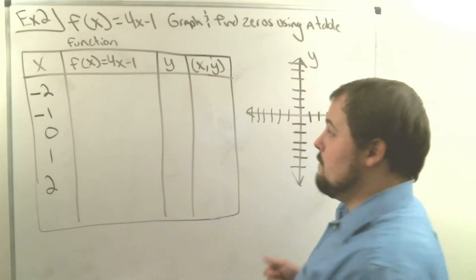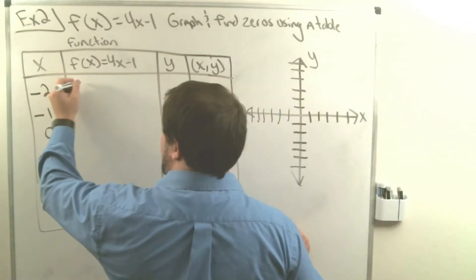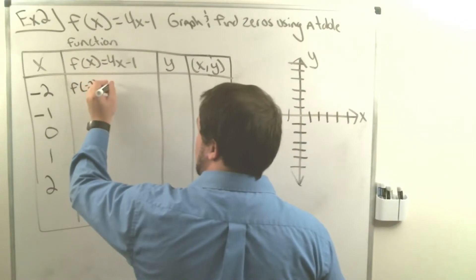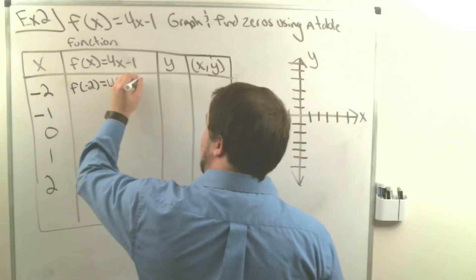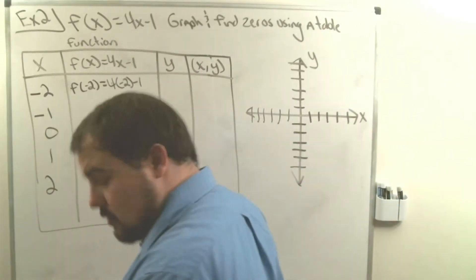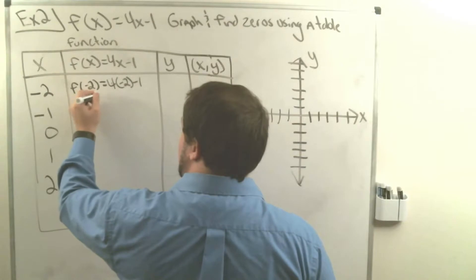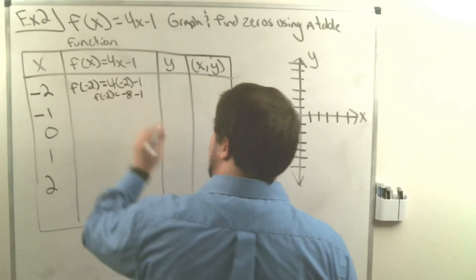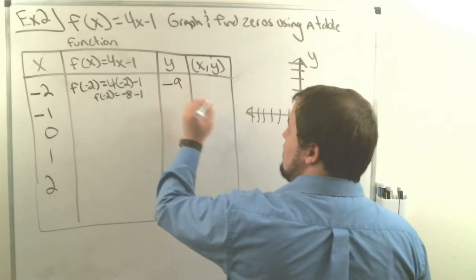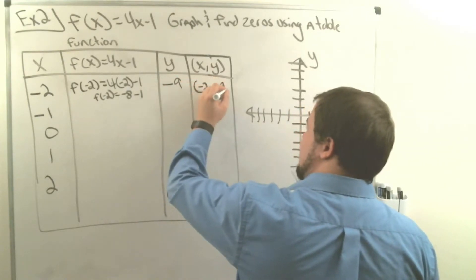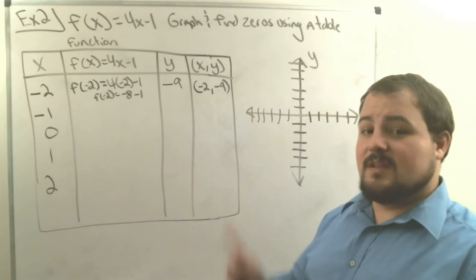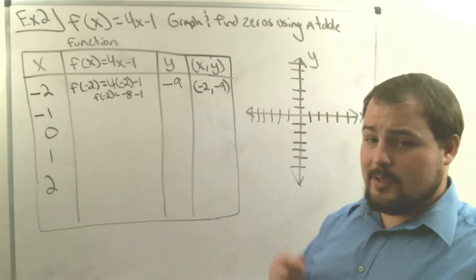We might not fit all five values, but we'll try. Starting with f of negative 2: that equals 4 times negative 2 minus 1, which is negative 8 minus 1, giving us negative 9. Our coordinate pair would be negative 2, negative 9. But looking at that, I can go back 2 on the x-axis but I can't go down 9 on our grid, so that's not a point we can graph.